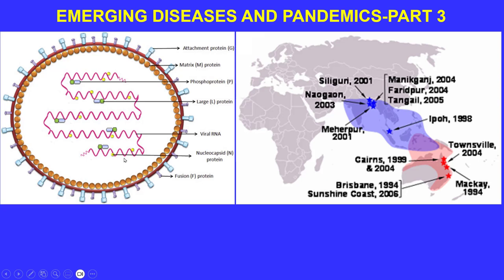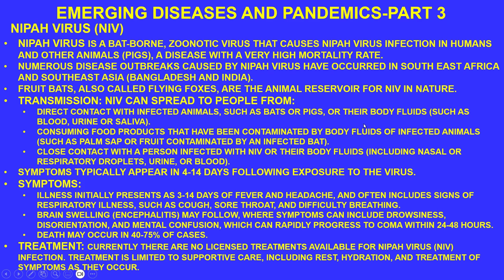Here is the virus structure — a very long, continuous RNA virus with phosphoprotein attachments, nucleocapsid proteins, a fusion protein, and an attachment protein.